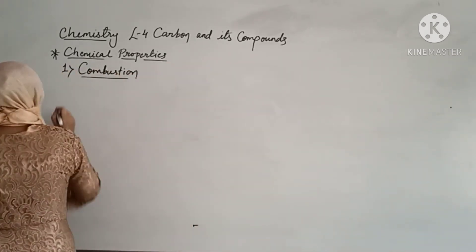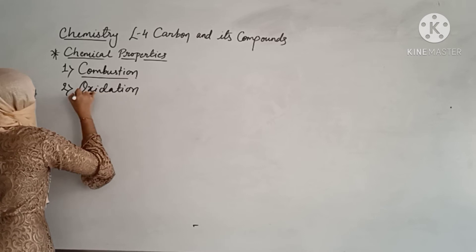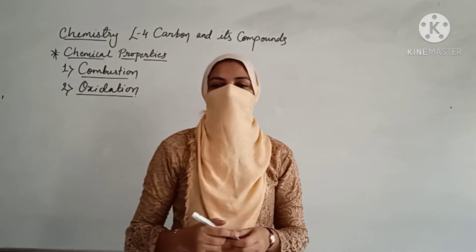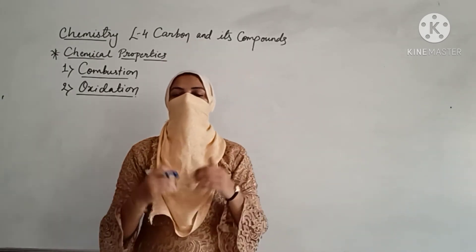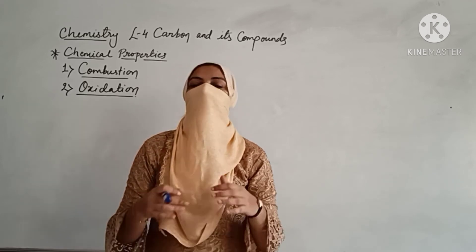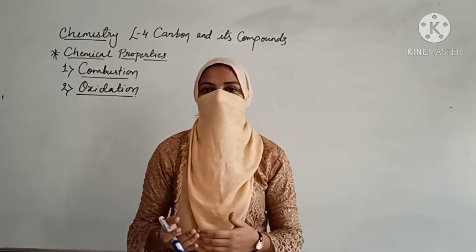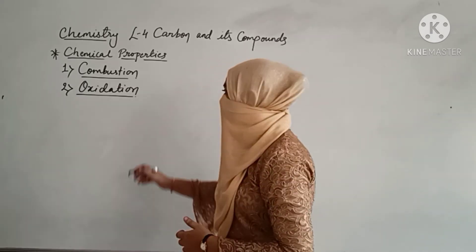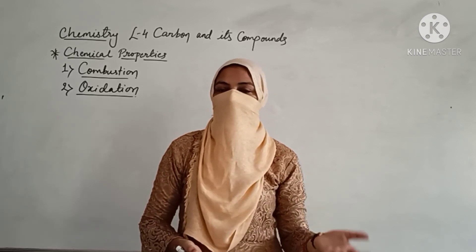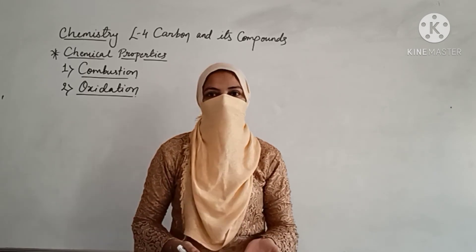The second property is oxidation. We covered oxidation in detail as well. Oxidation is either the gain of oxygen or the loss of hydrogen. If we are gaining oxygen, we call it oxidation. If we are losing hydrogen, we still call it oxidation. The reverse is reduction. We also completed the oxidation where alcohols are converted to carboxylic acids, either by using KMnO₄ or K₂Cr₂O₇, that is potassium dichromate.